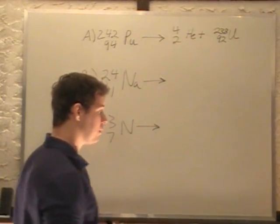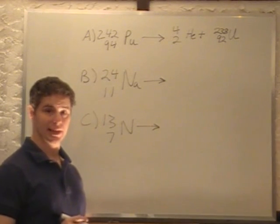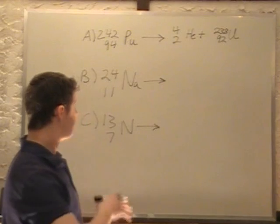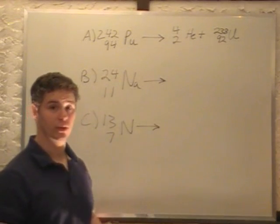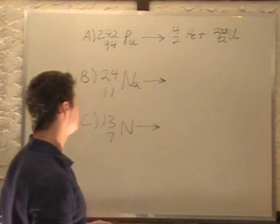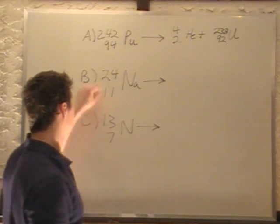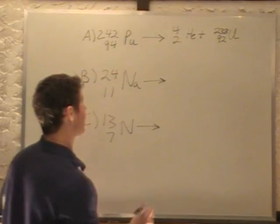In the second case, we are undergoing beta minus decay. So beta minus decay is when a neutron decays to a proton and an electron. So we're losing a neutron, gaining a proton and an electron. So if we lose a neutron and gain a proton, this stays the same.